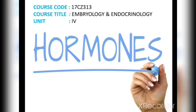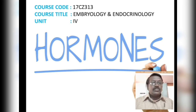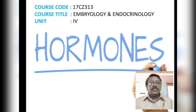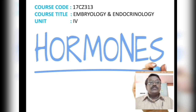The blood is a carrying agent which carries the hormones to the respective target organs, where the hormones bind with the respective receptors of the target cells and they perform different types of actions as well as mechanisms. Today, in this video lesson, I am going to analyze the action of hormones on its target cell.